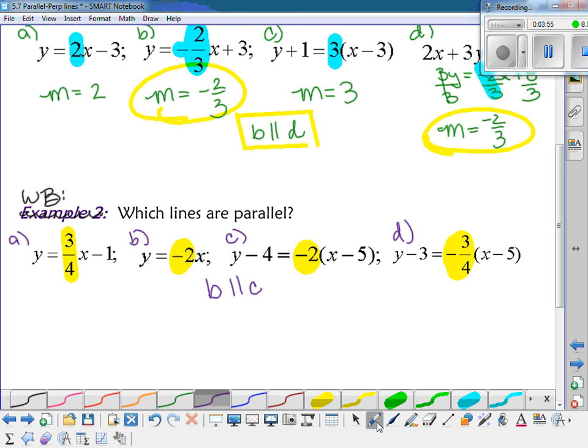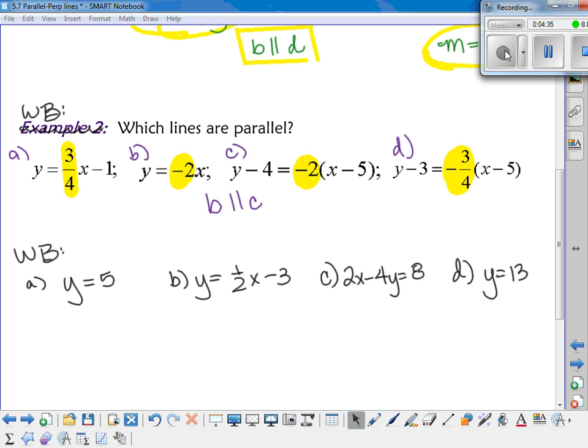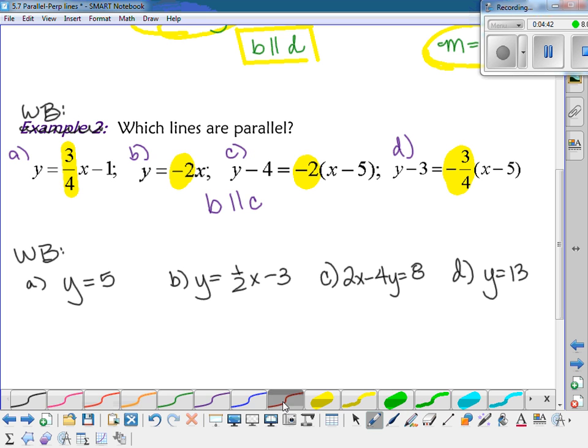Alright, I have another one for you guys to look at on your whiteboards. Okay, so take a look at those lines and see which lines are parallel. Okay, so if it's in Y equals MX plus B form, if you look at A and D, there's no MX, right? So that means on both of those, your slope is equal to zero.